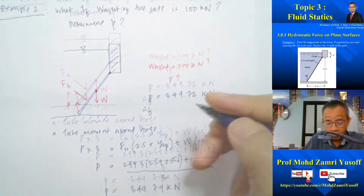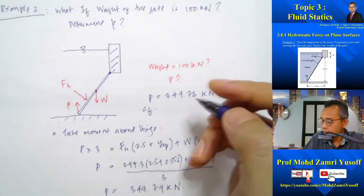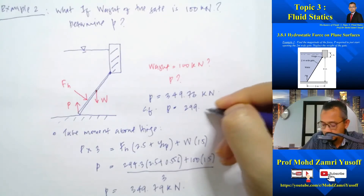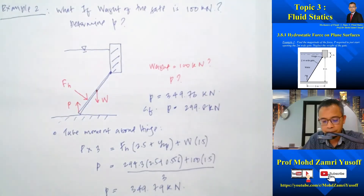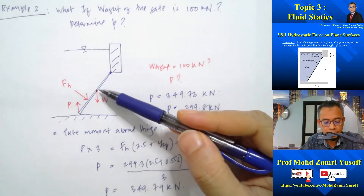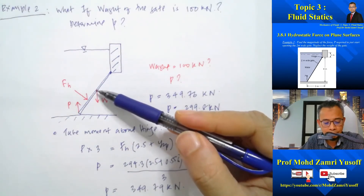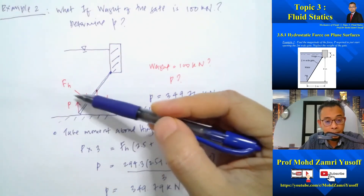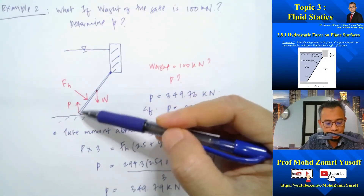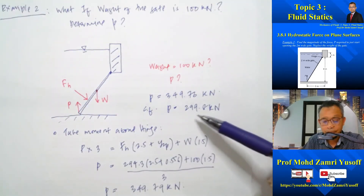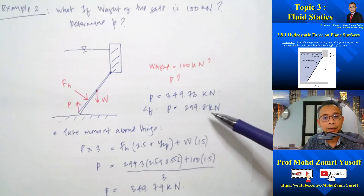Comparing the two cases: without the gate weight, P equals 299.8 kilonewtons; with the non-negligible weight of 100 kilonewtons, P equals 329.79 kilonewtons. As expected, because the weight is non-negligible, the force required to open the gate is slightly higher.